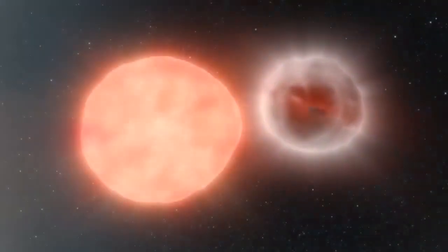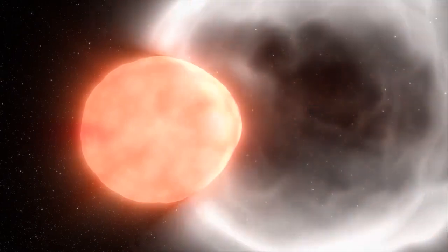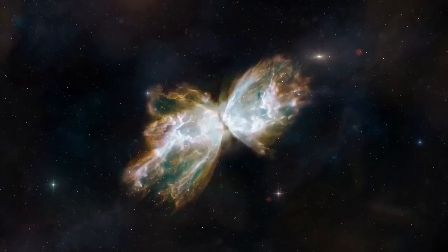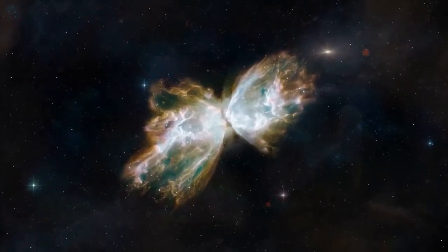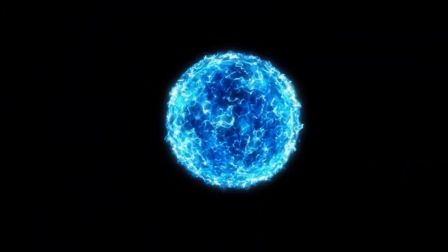When this happens, Betelgeuse will get very bright for a few weeks or months, maybe getting as bright as the full moon and being able to be seen during the day. When is it going to go off? Most likely, it won't happen during our lives, but in reality, no one knows when it will actually go off. It might happen tomorrow or in a million years.